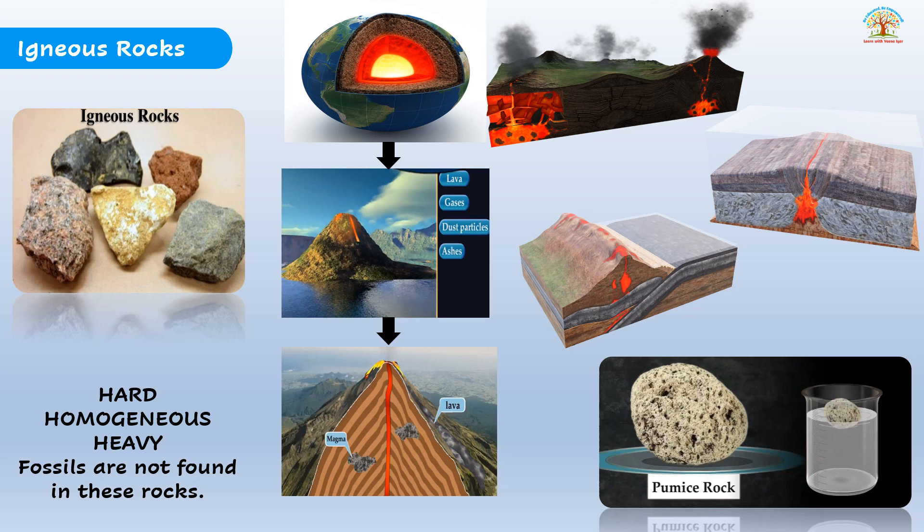Now, igneous rocks. Igneous rocks are hard, heavy, and homogeneous. In igneous rocks, you may not find fossils. The interior of the earth has a very high temperature due to the sun's heat and variations in climate, so the material in this part is in a molten state - you can find that shown over here in the diagram. I'm also showing it on the globe here. So this is the molten state.